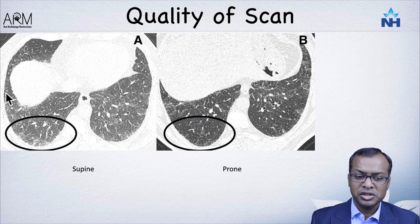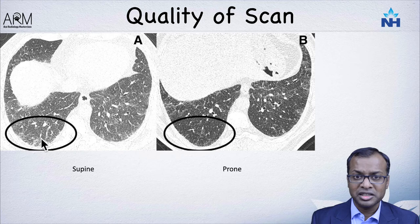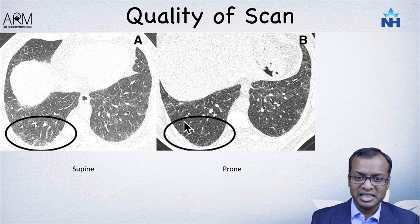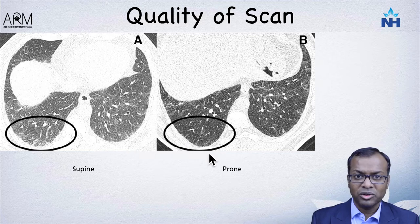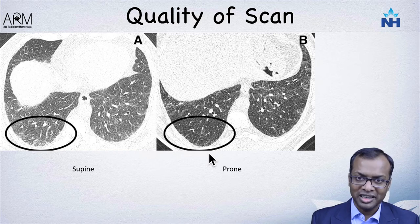Supine imaging may show changes in the lung bases which could represent early interstitial lung disease. When you put the patient in a prone position, you can see those areas clearing, suggestive of a dependent change rather than true interstitial lung disease.